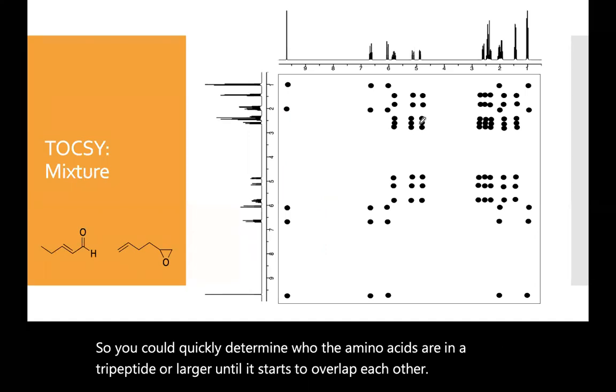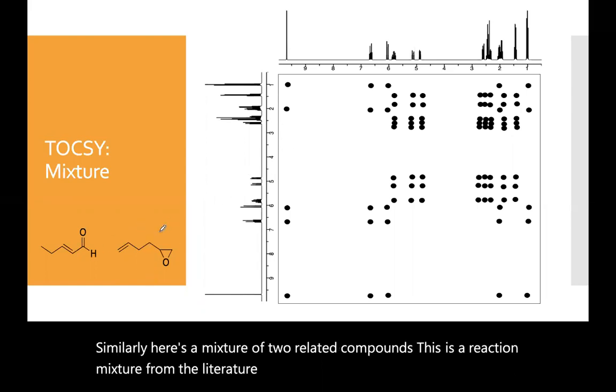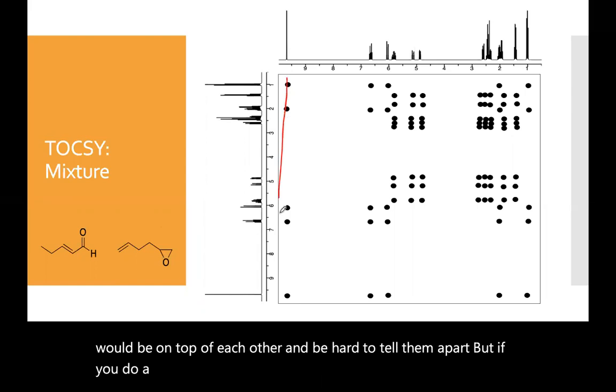Similarly, here's a mixture of two related compounds. This is a reaction mixture from the literature. And if you did a COSY, these peaks would be on top of each other and be hard to tell them apart. But if you do a simple TOCSY here, you can just go, okay, this is all part of one compound, which is connected into all of these peaks.